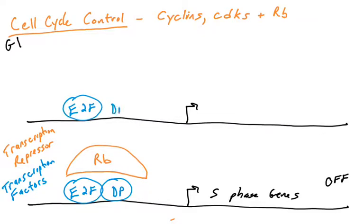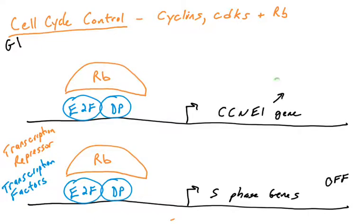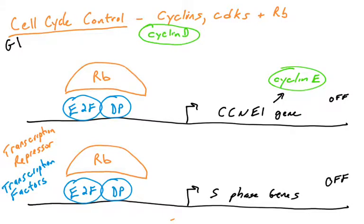We're going to introduce another gene controlled by these same transcription factors and transcriptional repressors. This is a gene called CCNE1, which makes a protein called cyclin E. In a previous video we introduced the cyclin D protein, and now we're going to talk about cyclin E. Cyclin D, in fact, regulates the cyclin E gene, and we're going to see that shortly.